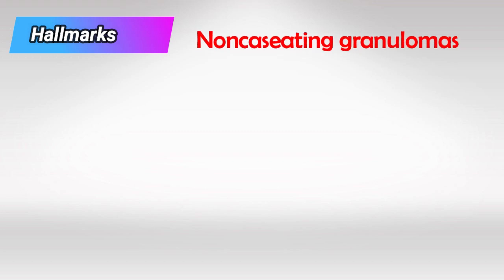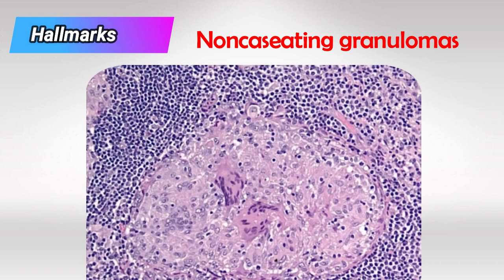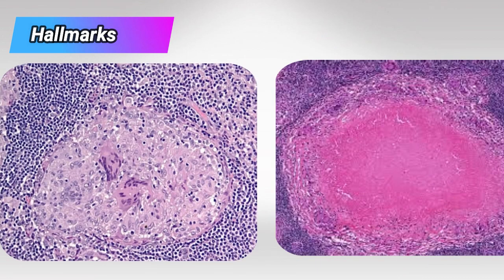Now I'll teach you how to spot the hallmarks in sarcoidosis. The first highly characteristic feature is non-caseating granulomas, which is a simple granuloma but with no caseation inside, because there is no infective organism. Let's look at caseating and non-caseating granulomas side by side so we can differentiate between them.